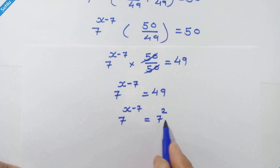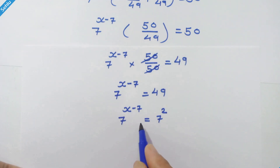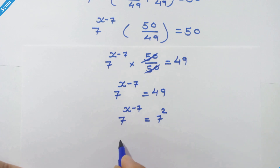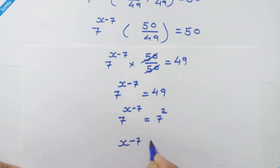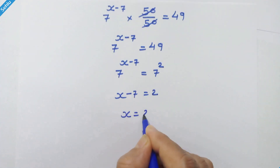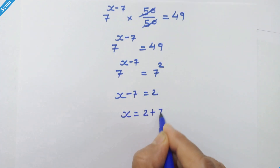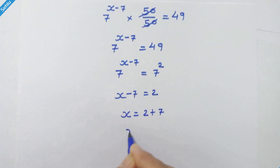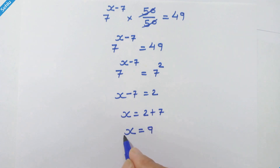Here we have the same base on both sides, so we can equate their exponents. x minus 7 is equal to 2, therefore x is equal to 2 plus 7, so x is equal to 9 is the answer.